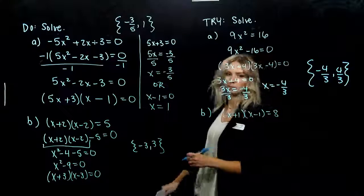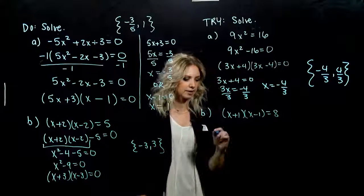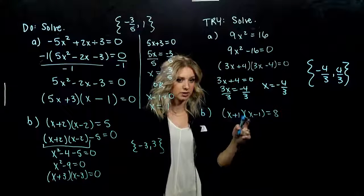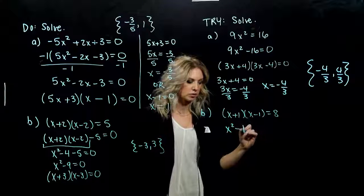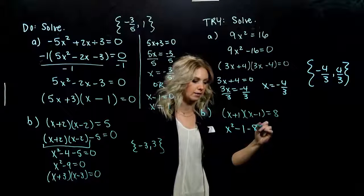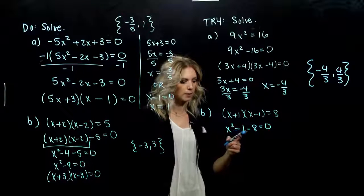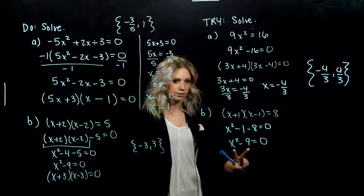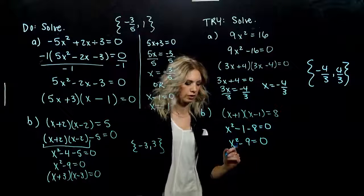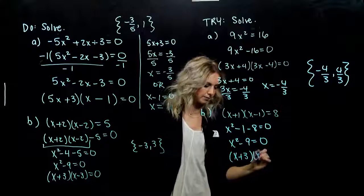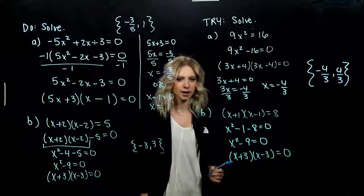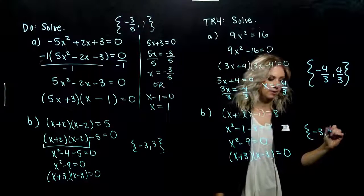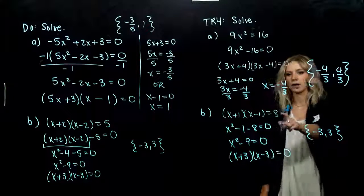For Part B, we have to get everything on one side and get rid of the parentheses. Foiling gives a difference of squares: x squared minus 1. We then subtract 8 and move that over to combine, giving x squared minus 9 equals 0. That's two terms, subtraction, perfect squares — a difference of squares. So x equals negative 3 or positive 3 satisfies our original equation.